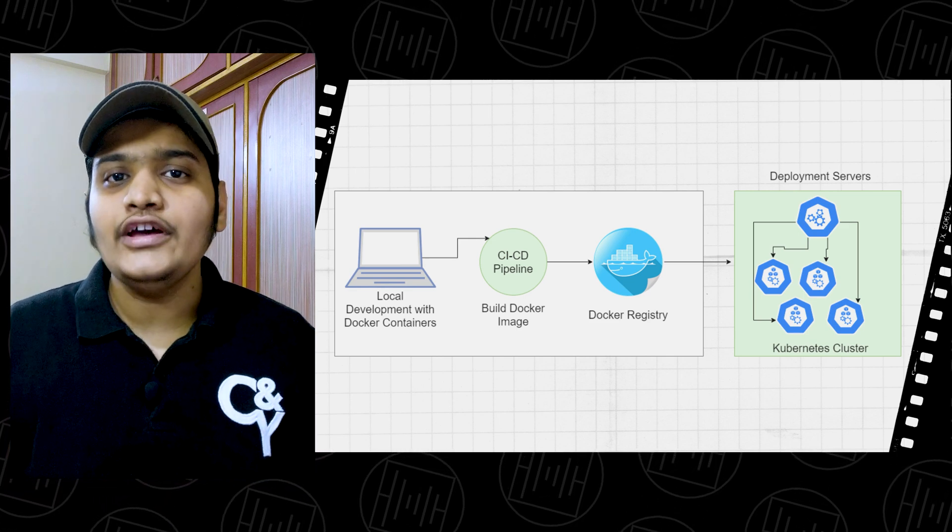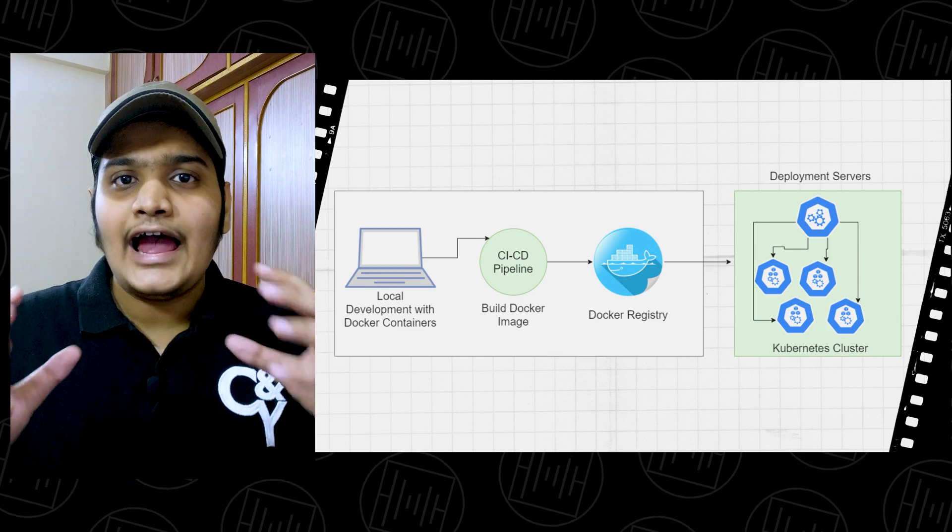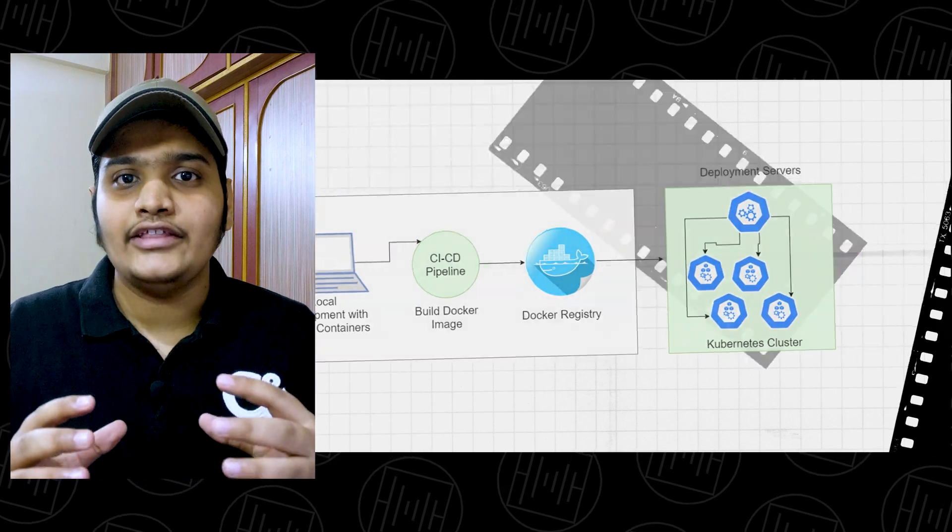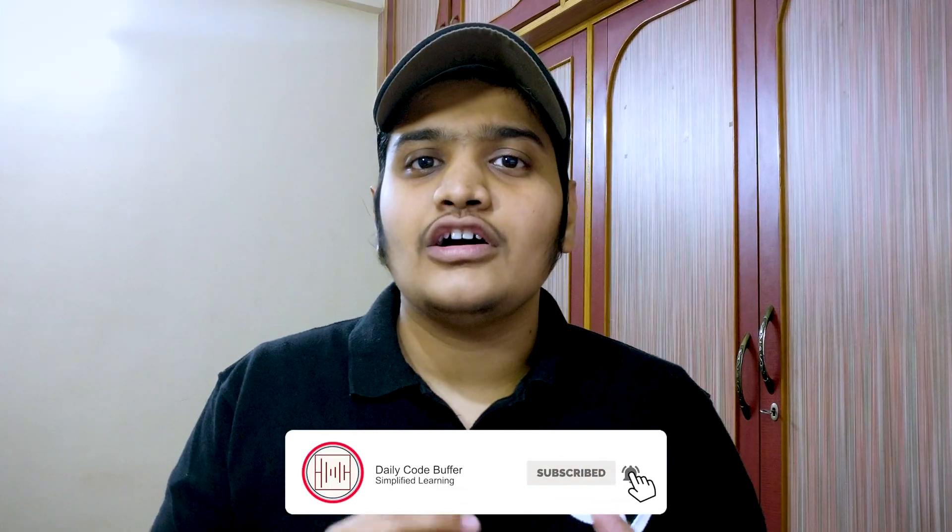Kubernetes provides complete orchestration of the containers deployed to the servers. Both of them come hand in hand together. You've got an idea how Kubernetes and Docker work together — though they are different, they make a perfect match. You can run Docker without Kubernetes and you can run Kubernetes without Docker, but many companies use them together and it has proven advantages.